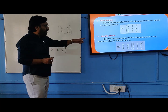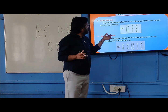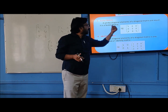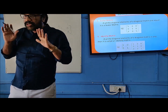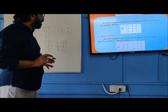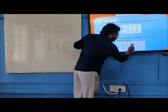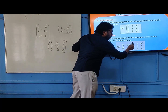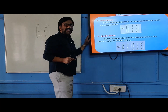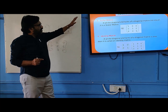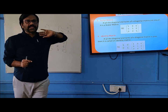Then we go to identity matrix. In particular, if the diagonal elements of a diagonal matrix are all equal to one, then it is called an identity matrix. So: square matrix, diagonal matrix, scalar matrix, identity matrix.